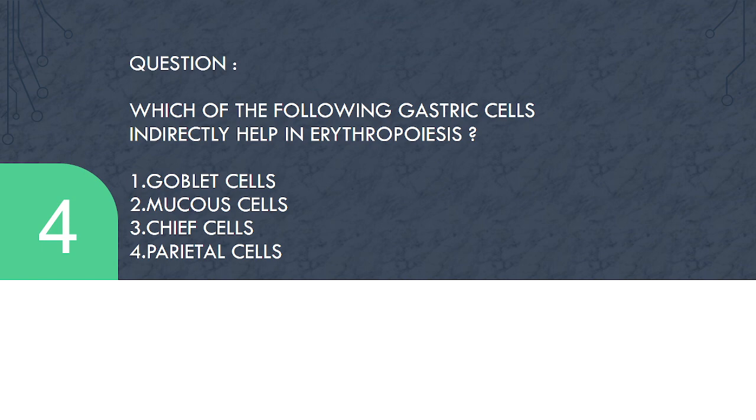Which of the following gastric cells indirectly help in erythropoiesis, the process of red blood cell formation? Answer 1: goblet cells. 2nd: mucous cells. 3rd: chief cells or parietal cells. The answer is parietal cells.